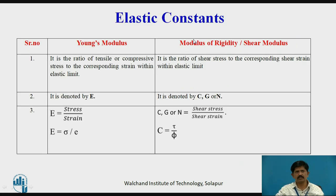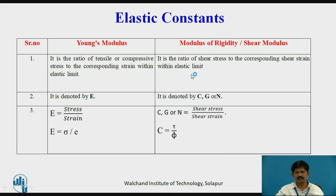Now the elastic constants. Young's modulus is the ratio of tensile or compressive stress to the corresponding strain within the elastic limit, denoted by E. So E = sigma / e (strain). Modulus of rigidity or shear modulus is the ratio of shear stress to the corresponding shear strain within the elastic limit, denoted by C, G, or N. So C = tau / phi.